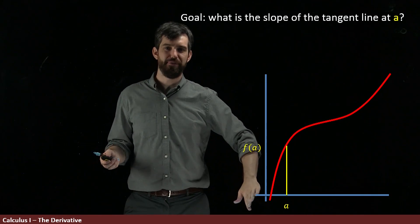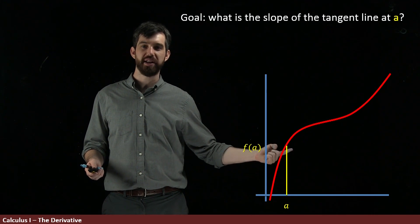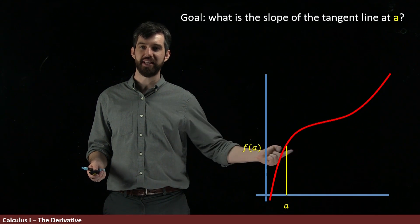So what does it even mean? Well, first of all, I've got some function I've drawn in here in red and I've chosen some particular point. I've got an a down here and it has a height of this f of a.